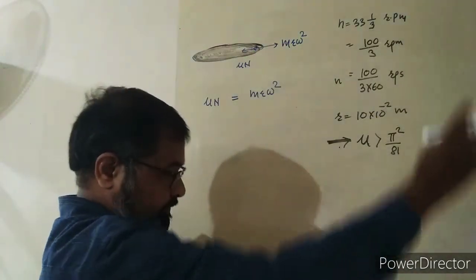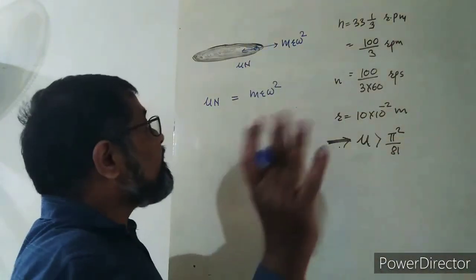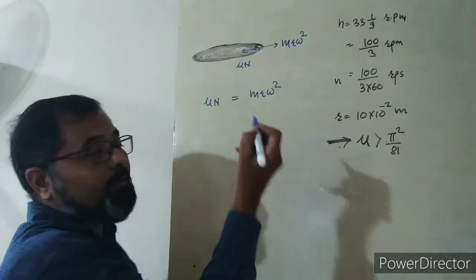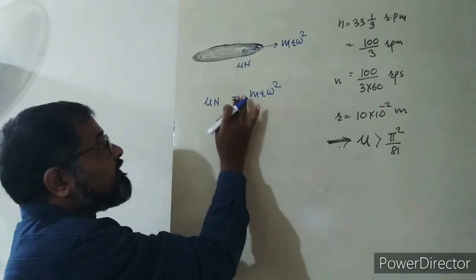When outward force increases, the mosquito will be thrown outward. To prevent this, μN should be sufficient. It should be equal to or greater than this value.